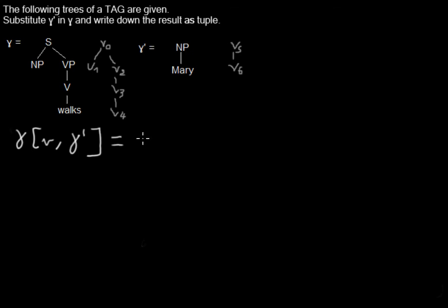And you substitute into that tree gamma bar or maybe like gamma bar. And what you get as a result is a triple consisting of a set of nodes and a set of edges, and a root node.